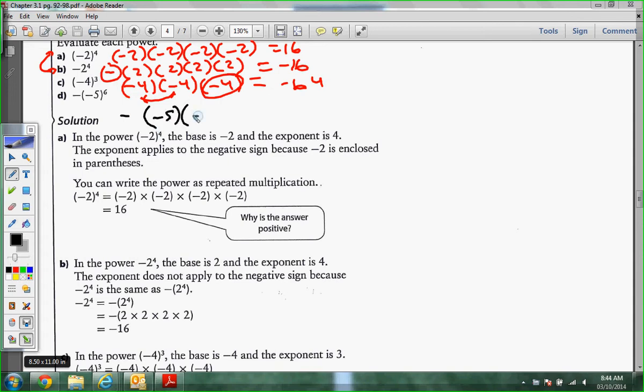We'd have a negative out here. It'd be negative 5, 6 times. 1, 2, 3, 4, 5, 6. And then these pairs. These pairs would all make positives. But this would turn everything to negative at the end.